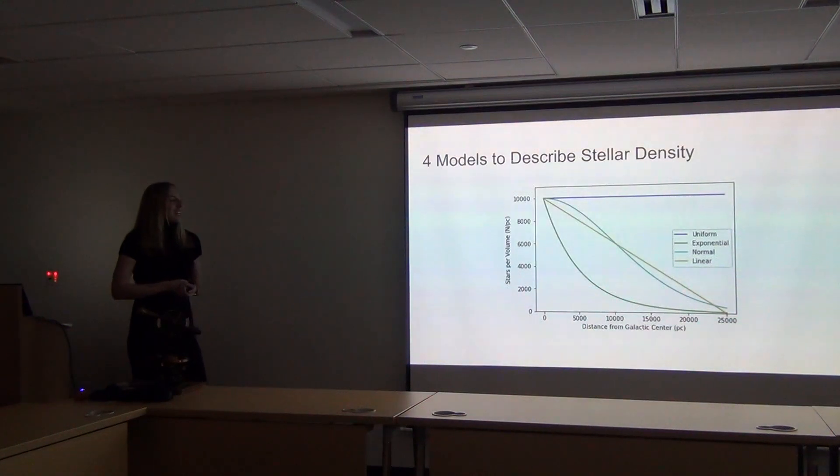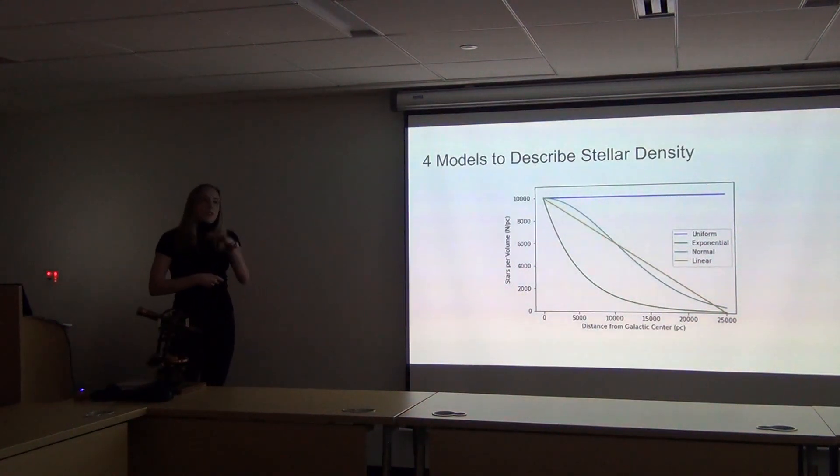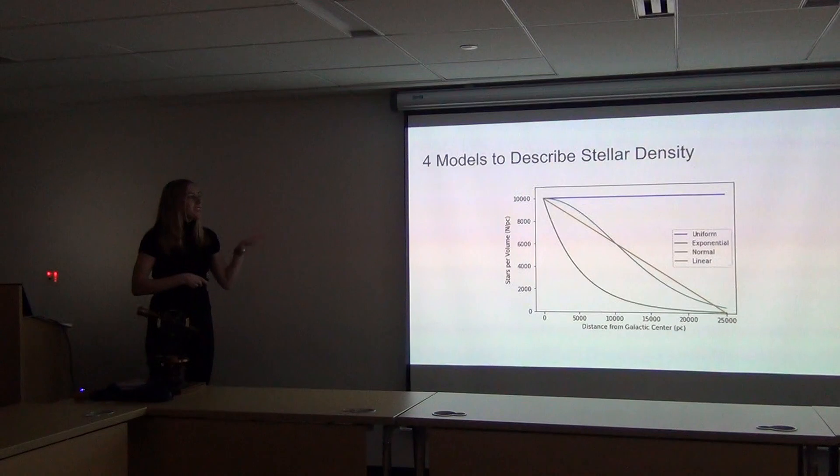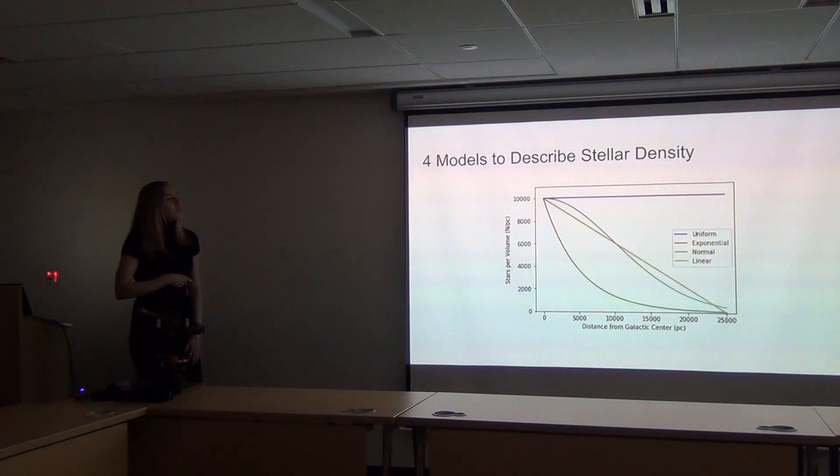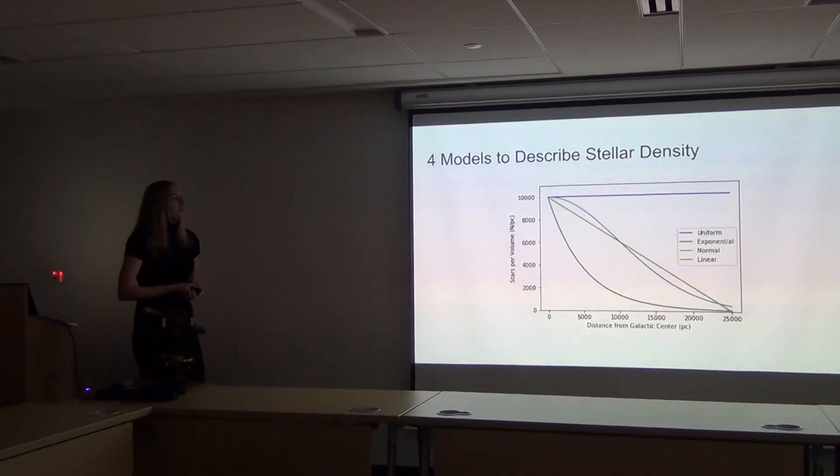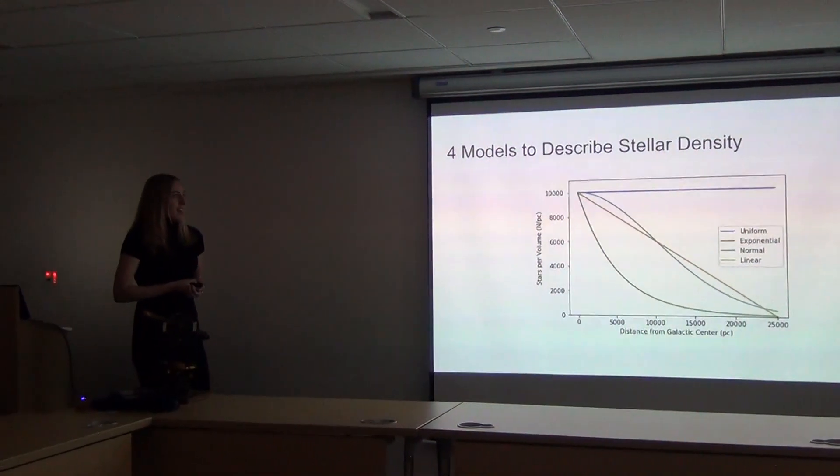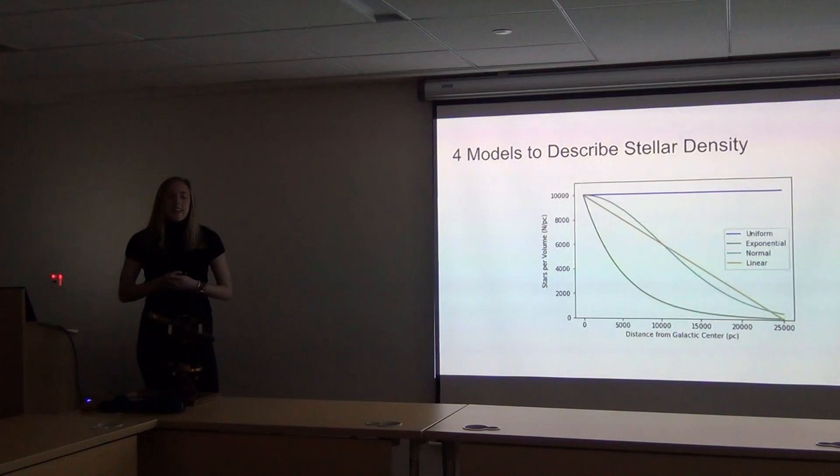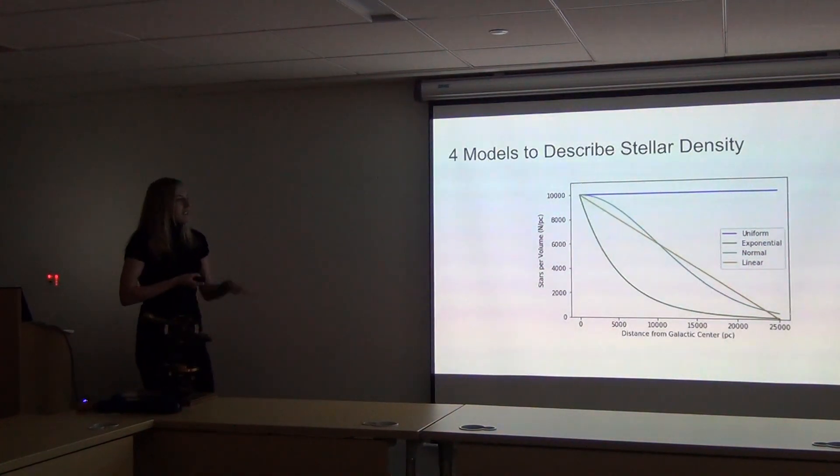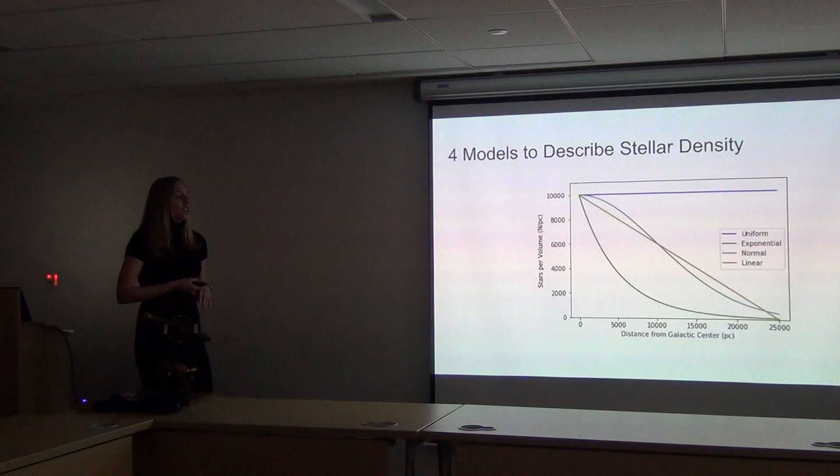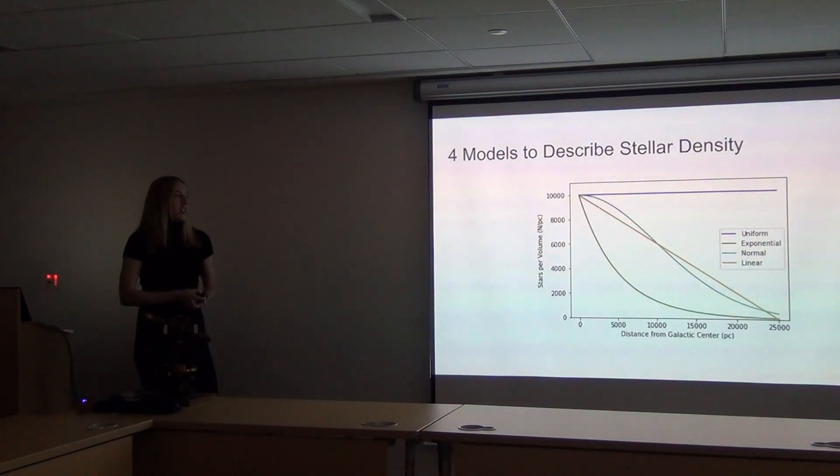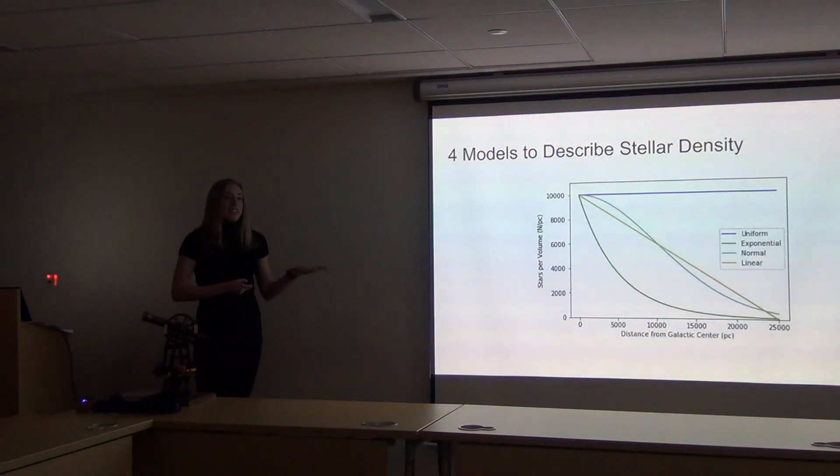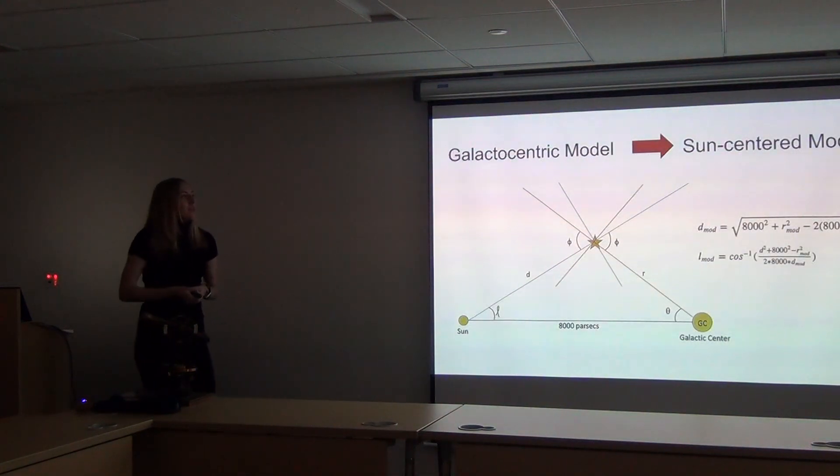But what I wanted to do was to try to use four simple models to describe what we observe with Gaia. I tried a uniform model, so no change in density, and these decreasing models, which would be exponential, normal like a Gaussian curve, and then linearly decreasing. And these four models, I used a number generator for all these different functions to create a random population of 200 million stars, and this would be centered at the galactic center.